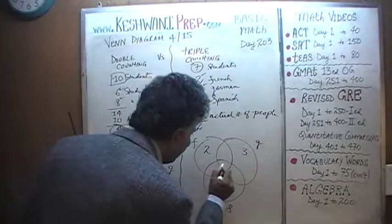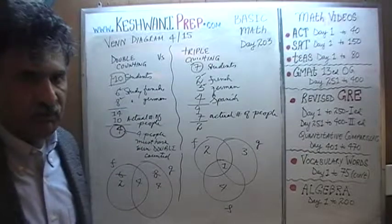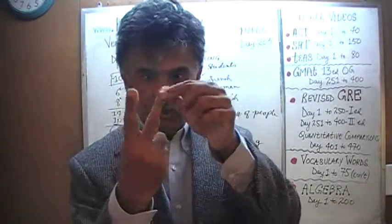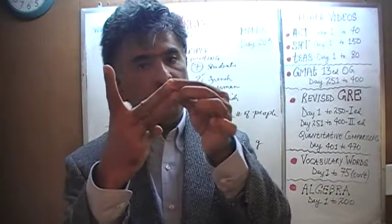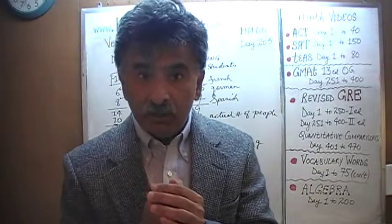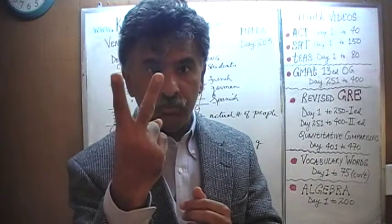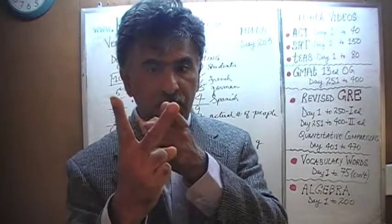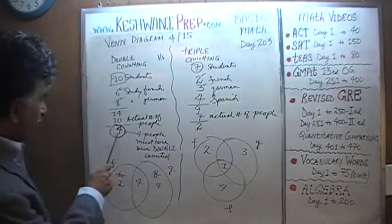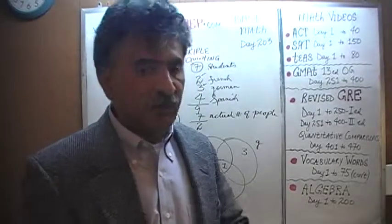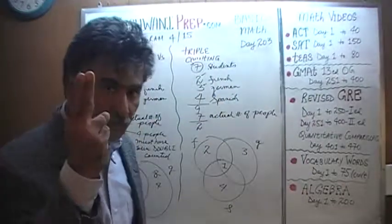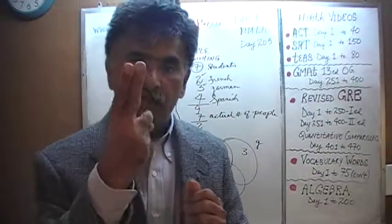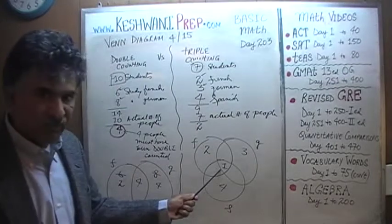That overflow of 2 tells us that 1 person is being counted as 3 people — 1 person is being triple counted. If you count 1 person but count them 3 times, you have a discrepancy of 2. Compare this to double counting: if you double count 1 person, they appear as 2, and the overflow equals the number being double counted — they match. But in triple counting it's different: an overflow of 2 means 1 person was counted as 1, 2, 3 — triple counted — giving a leftover of 2. Once we understand that notion, the rest is simple.